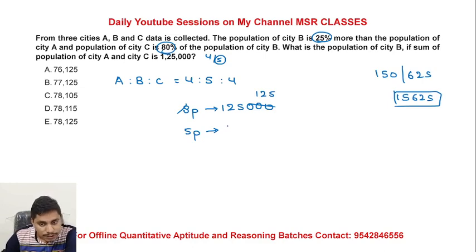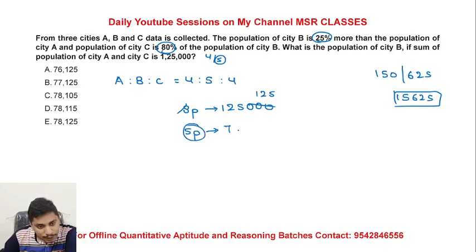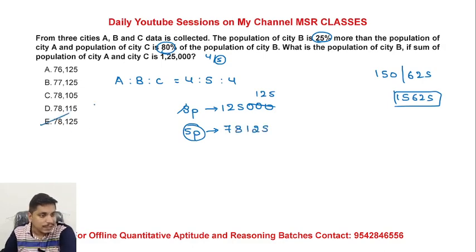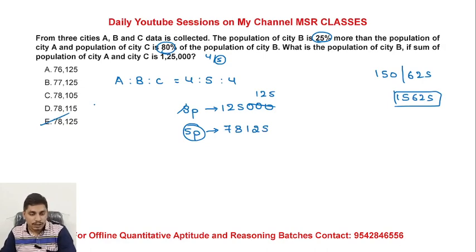Working through the calculation: 7, 8, 1, 2, 5 — 78,125 is the final answer for this question.